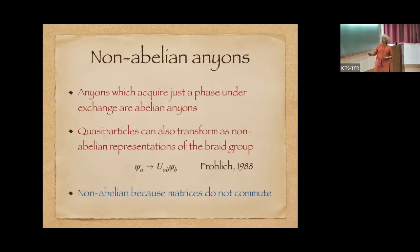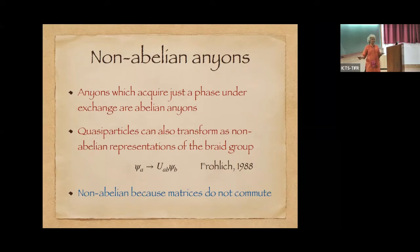And what I said were anyons are actually particles which just acquire a phase when they exchange. But in fact, quasiparticles in these condensed matter systems can also transform as a non-abelian representation of the braid group.